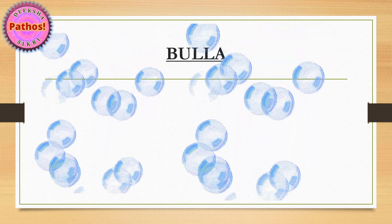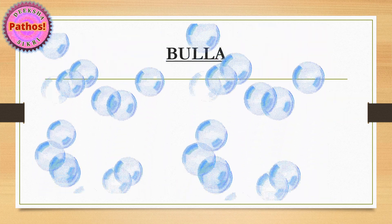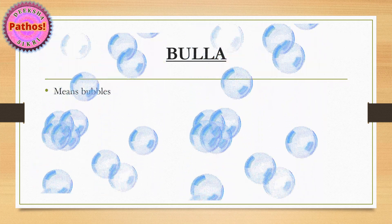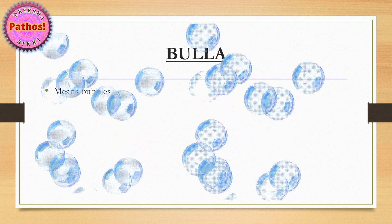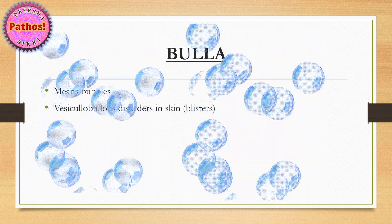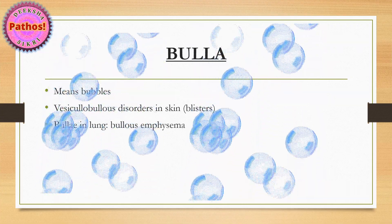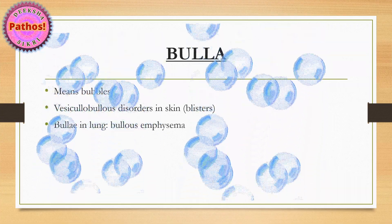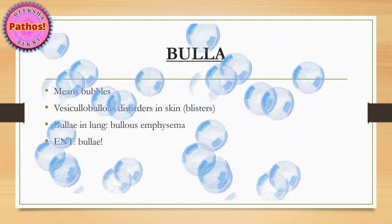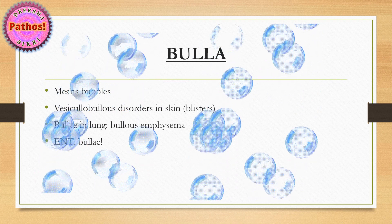The next term is bulla, which basically means bubbles. This term can be used to describe a couple of things grossly — for example, vesicular or bullous disorders in skin, which are the blistering disorders; bullae that you get in the lung, as in bullous emphysema; and in ENT anatomy you also describe a lot of bullae.